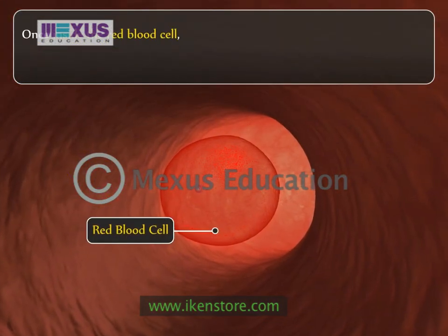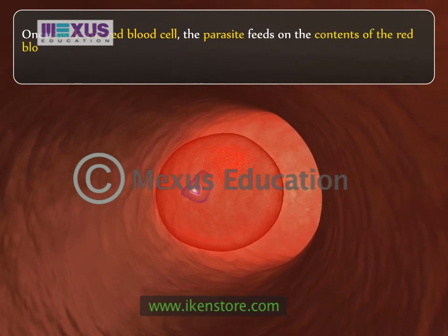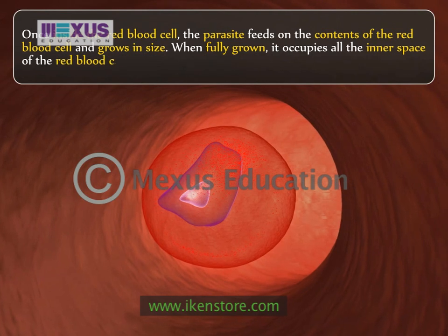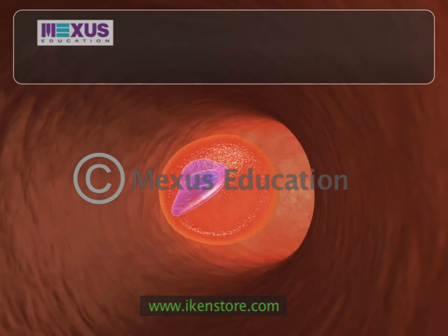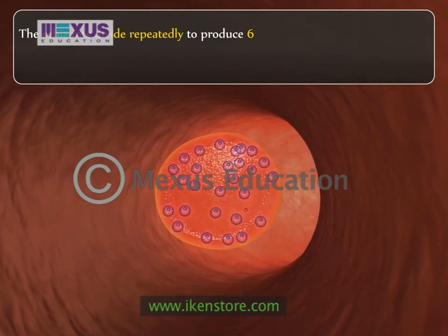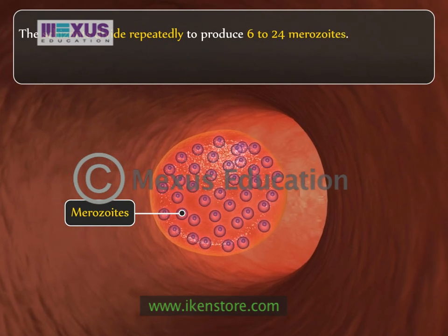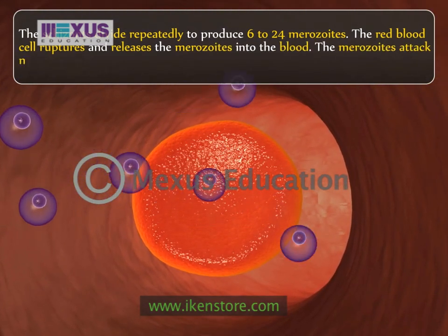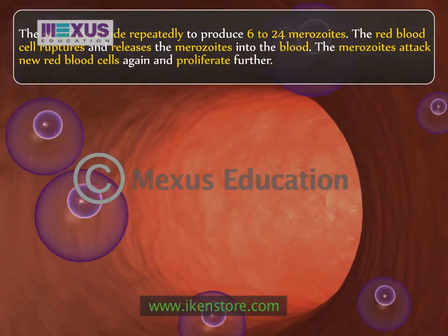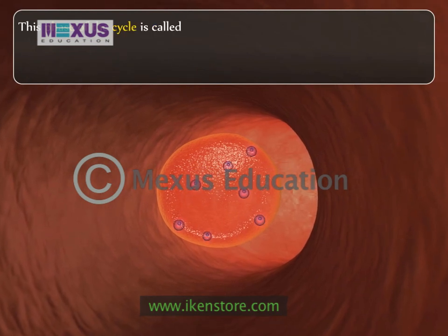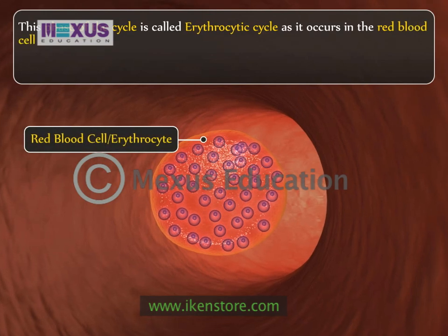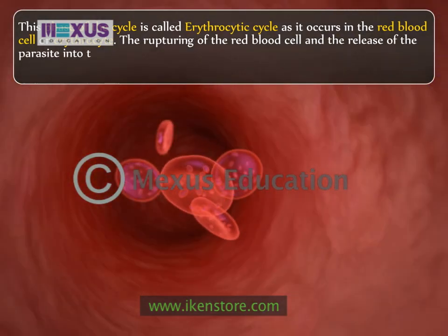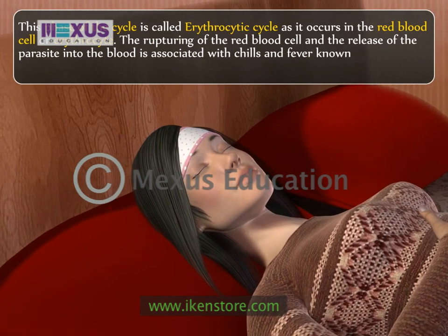Once inside the red blood cell, the parasite feeds on the contents of the red blood cell and grows in size. When fully grown, it occupies all the inner space of the red blood cell and is called a schizont. The schizonts divide repeatedly to produce 6 to 24 merozoites. The red blood cell ruptures and releases the merozoites into the blood, which then attack new red blood cells and proliferate further. This phase is called the erythrocytic cycle. The rupturing of the red blood cell and the release of the parasite into the blood is associated with chills and fever, known as malarial fever.